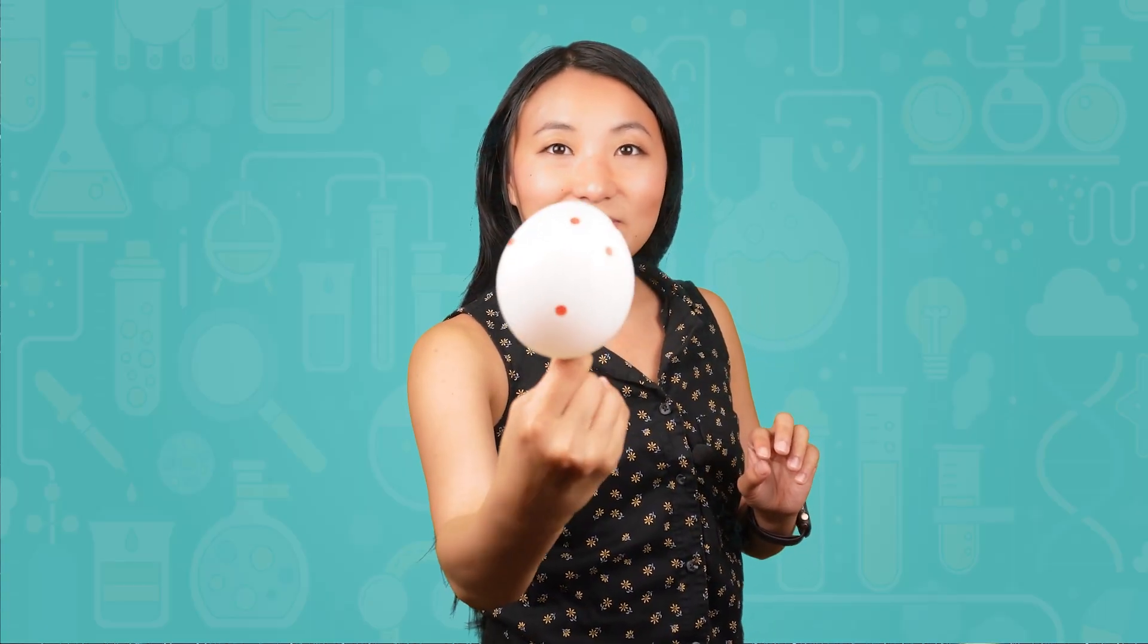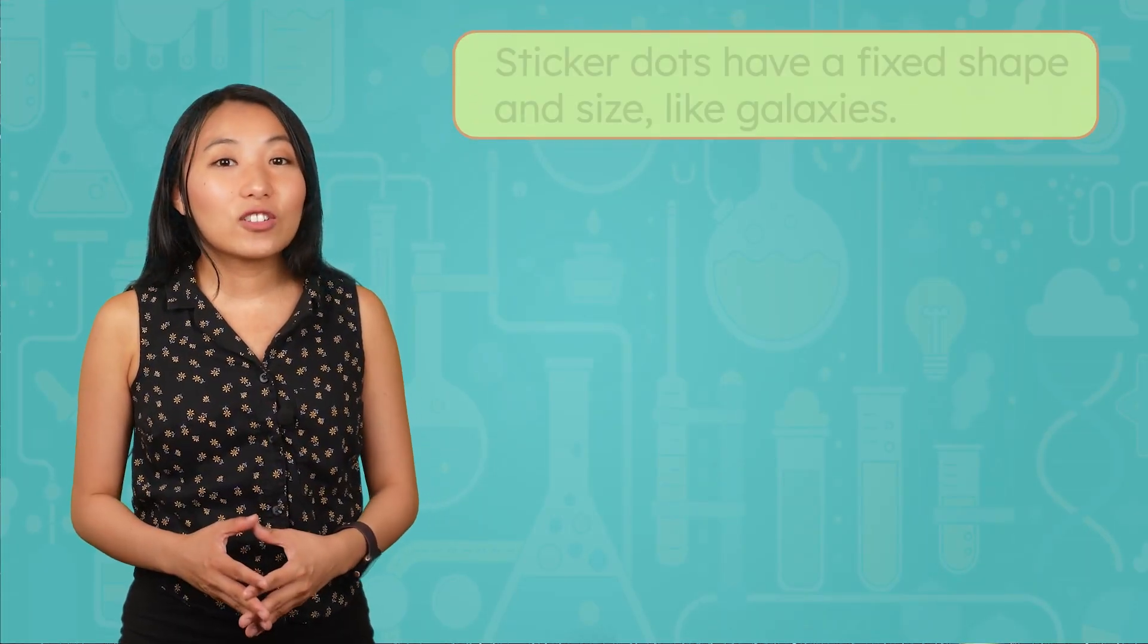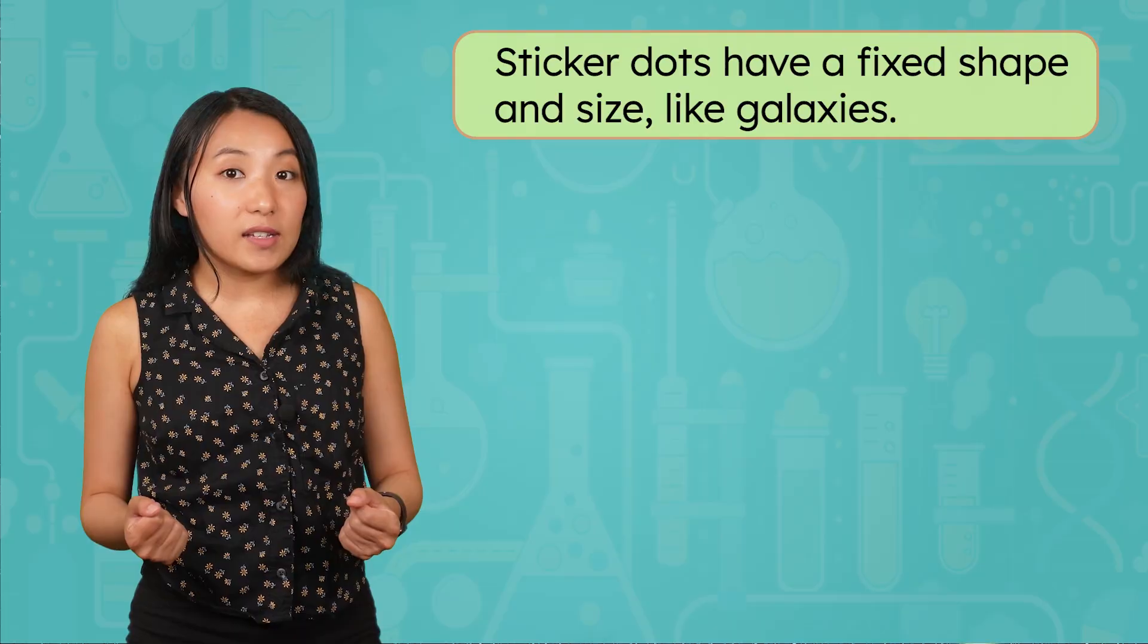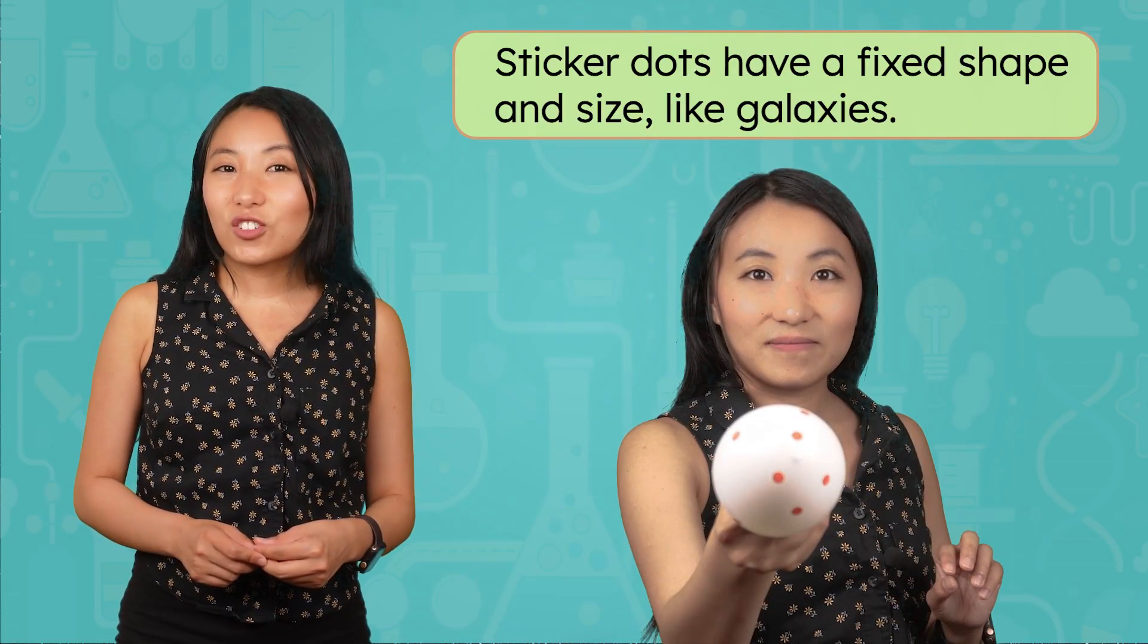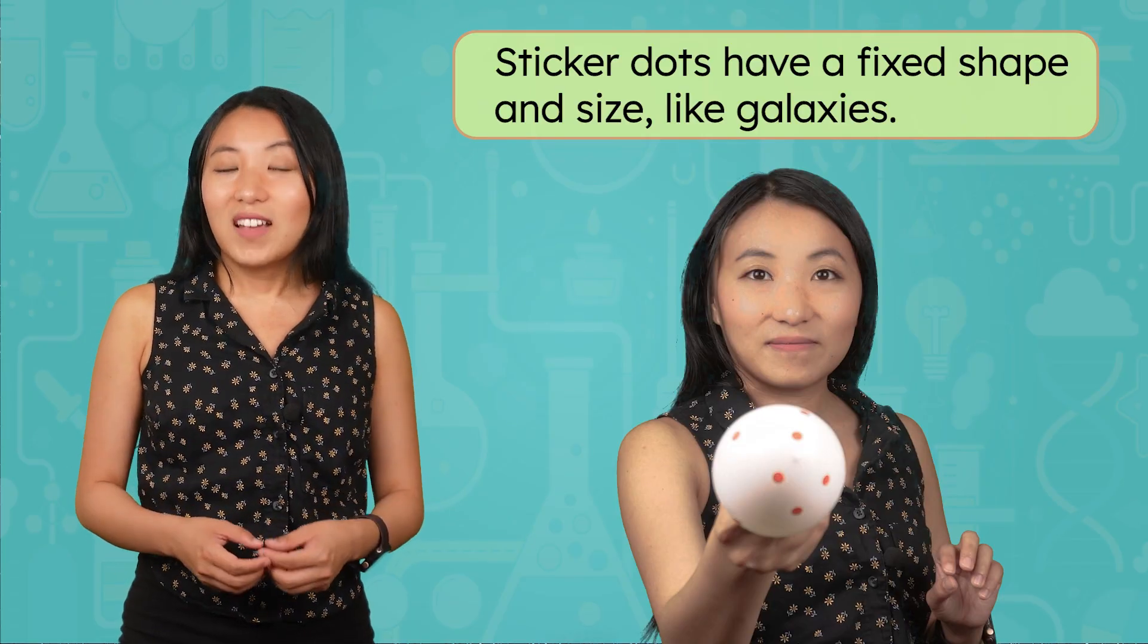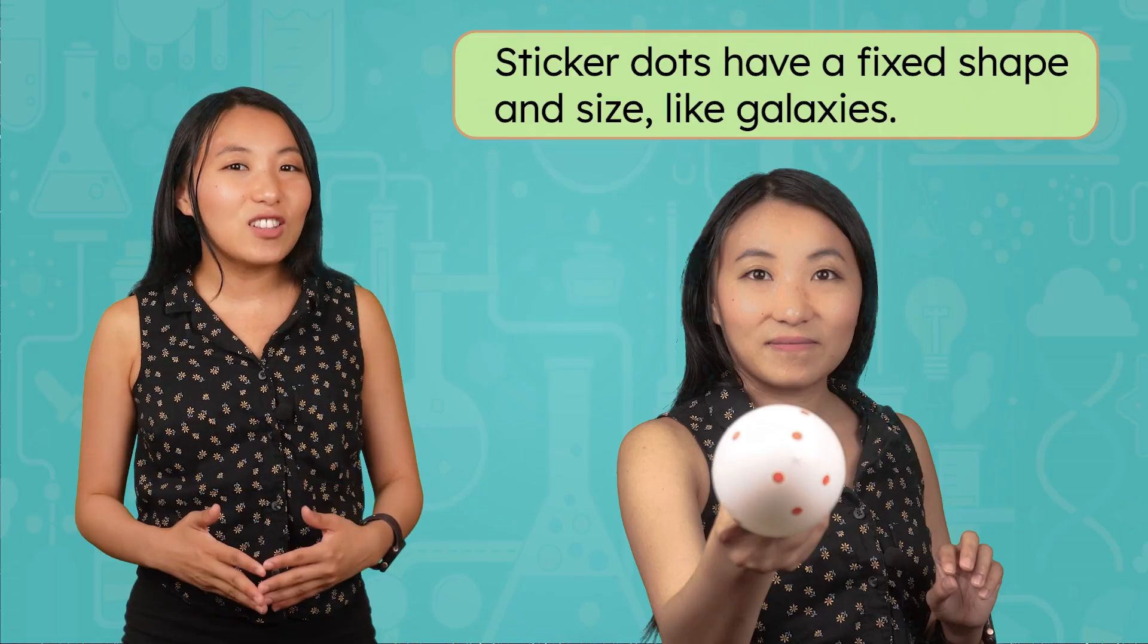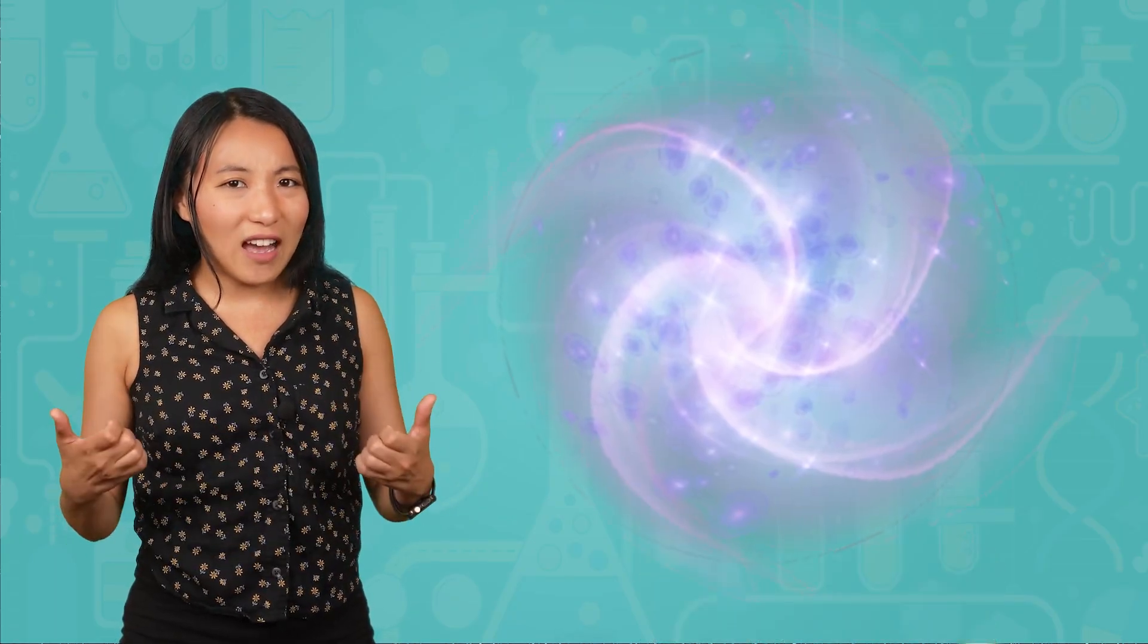But unlike the marker dots, the sticker galaxies themselves don't get any bigger. This is because our sticker dots have a fixed shape and size, much like galaxies. This makes these sticker dots a much better choice for representing galaxies than the dots we drew with a marker. This model gives us a more accurate picture of what's really happening in the universe. Galaxies aren't stretching out or expanding because they're held together by gravity. It's the space between them that grows, carrying galaxies farther from one another over time.